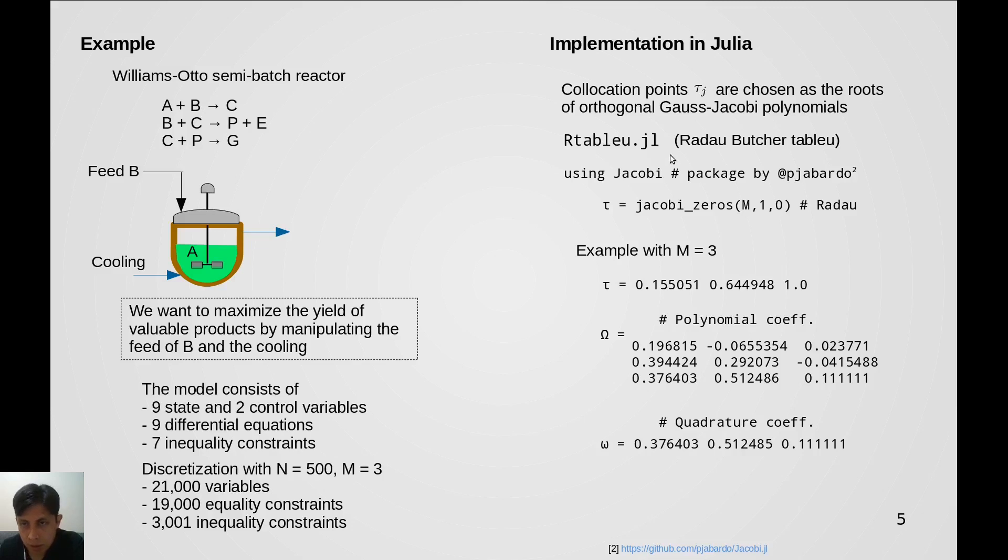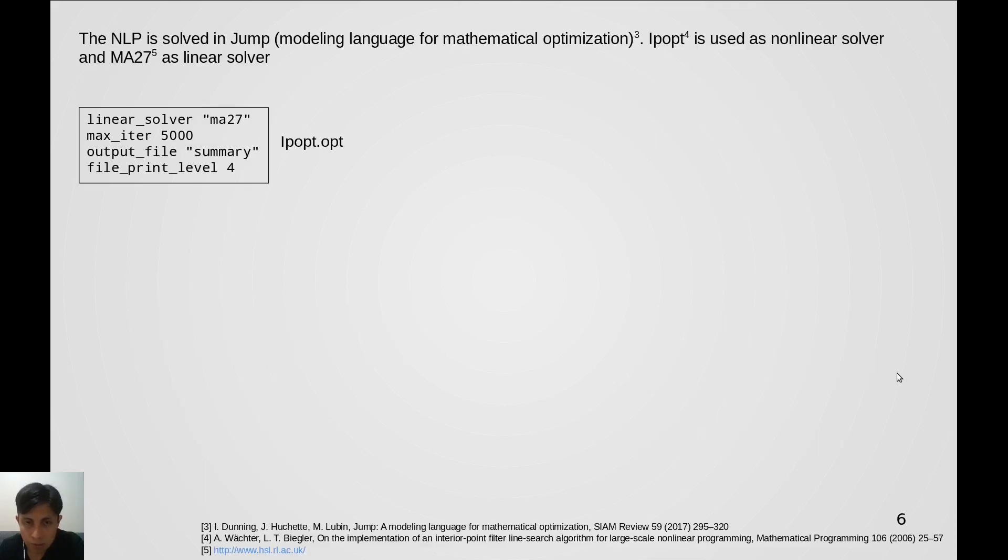In Julia I wrote this script to generate the collocation points. I'm using this Jacobi package which was developed by this author. Here you can see an example with three collocation points. Besides the points we also obtained polynomial and quadrature coefficients for our discretization scheme.